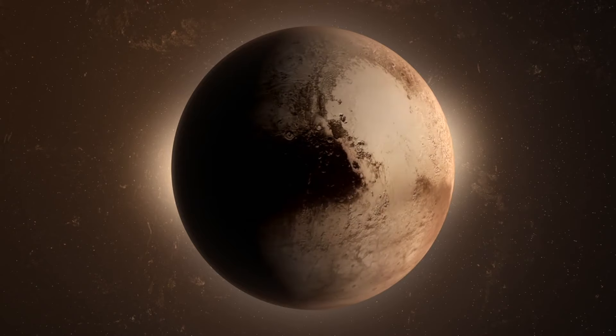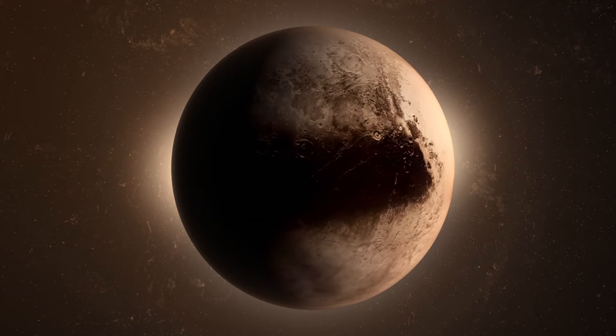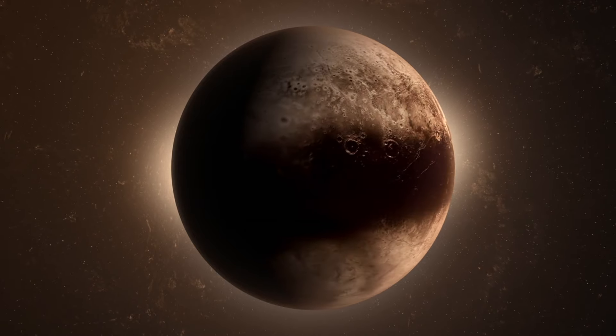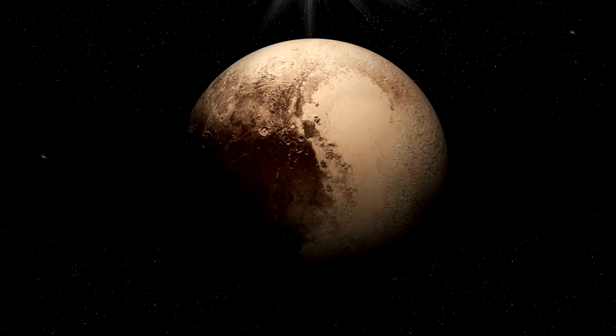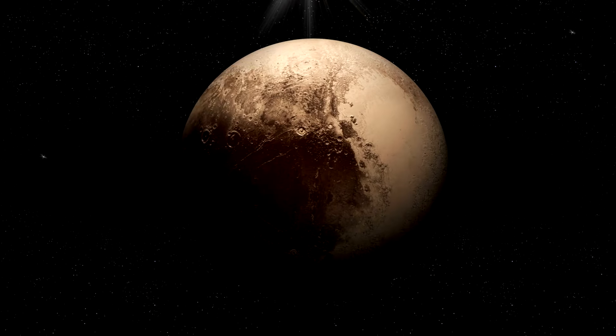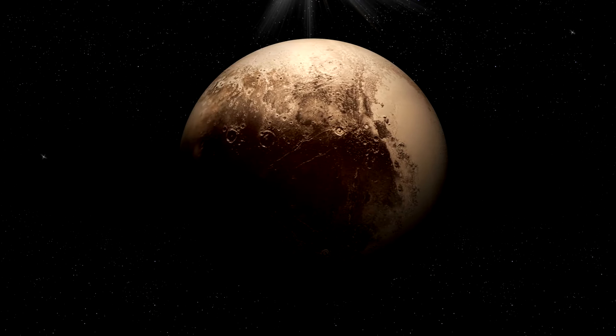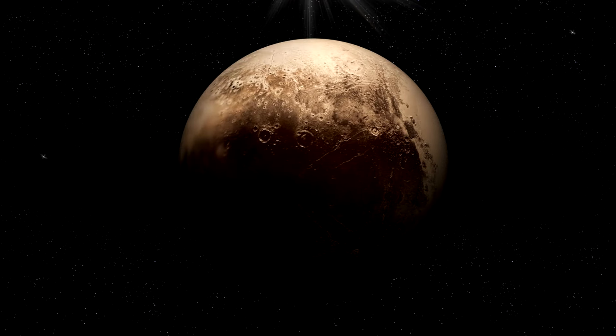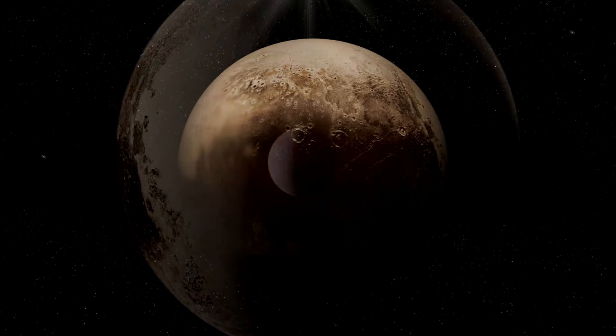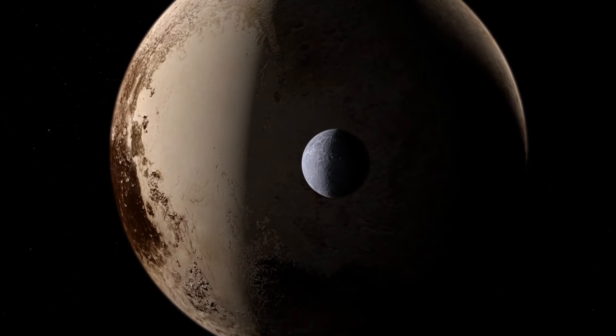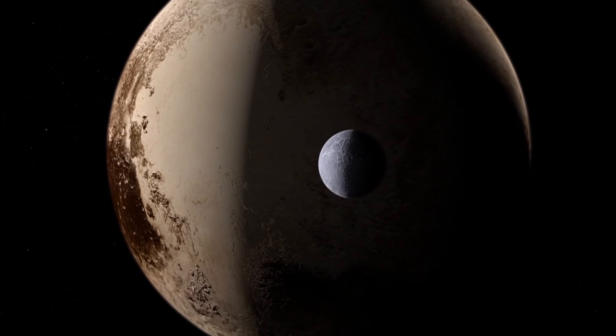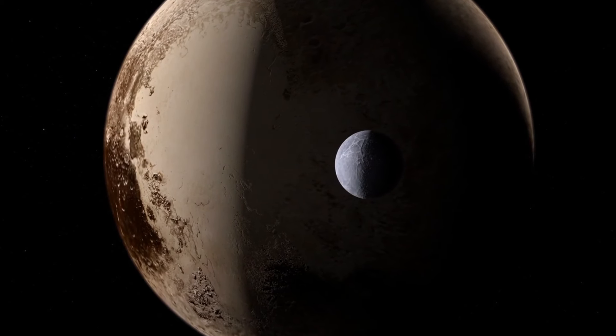The seasonal changes on Pluto, driven by its long orbit and axial tilt, are another fascinating aspect of its atmospheric behavior. As Pluto moves through different parts of its orbit, the distribution of sunlight across its surface changes, leading to the sublimation and condensation cycles of its atmosphere. This seasonal cycle can create temporary atmospheres that are much thicker during certain periods of the orbit, adding to the variability and dynamism of Pluto's environment.